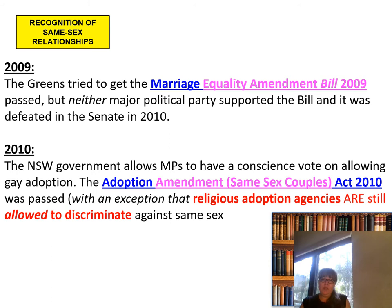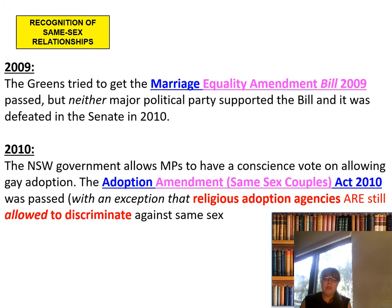In 2010, the New South Wales government allowed MPs to have a conscience vote on allowing gay adoption — so instead of following the party line, MPs could vote according to their own conscience. This was the Adoption Amendment Same-Sex Couple Act of 2010. It was passed, with an exception that religious adoption agencies are still allowed to discriminate against same-sex couples.